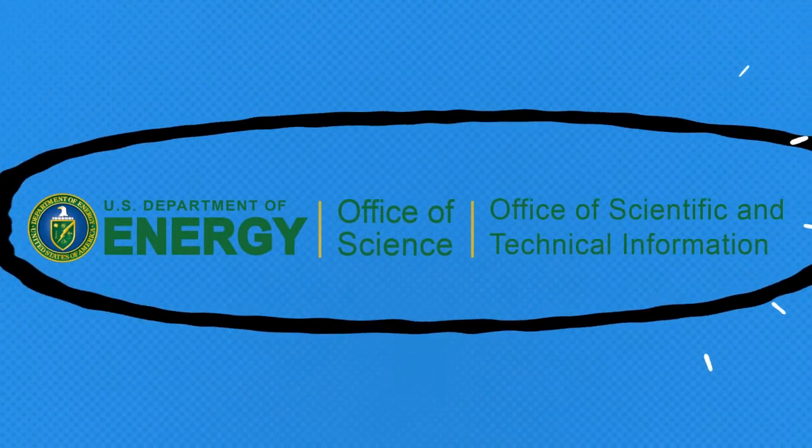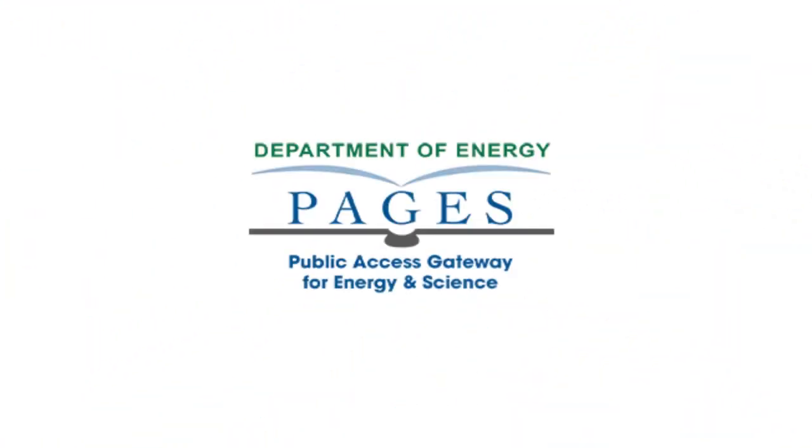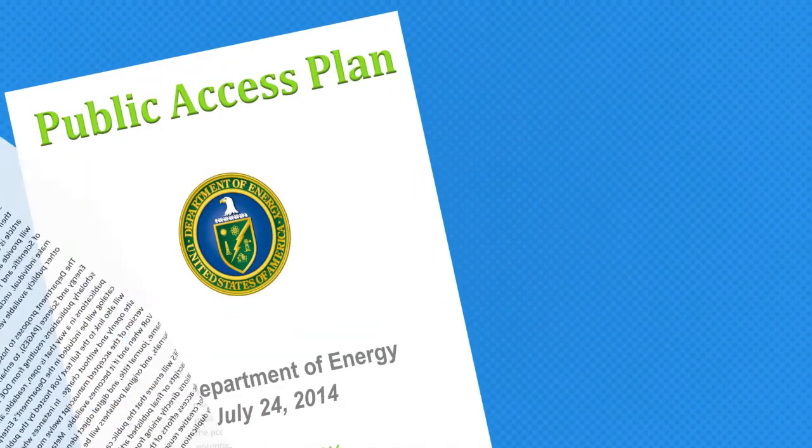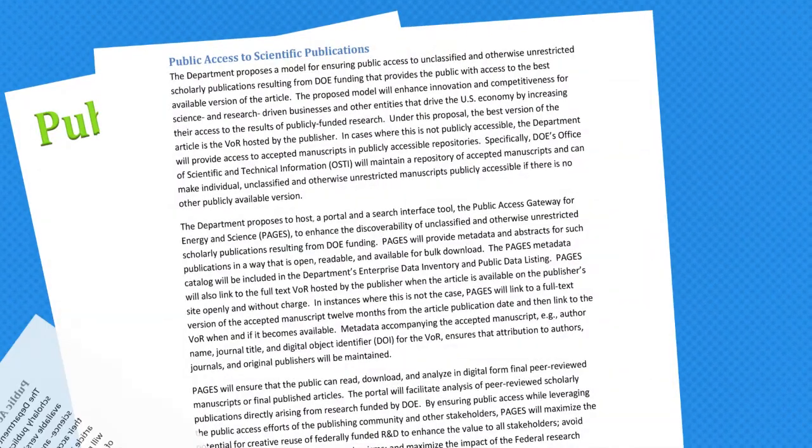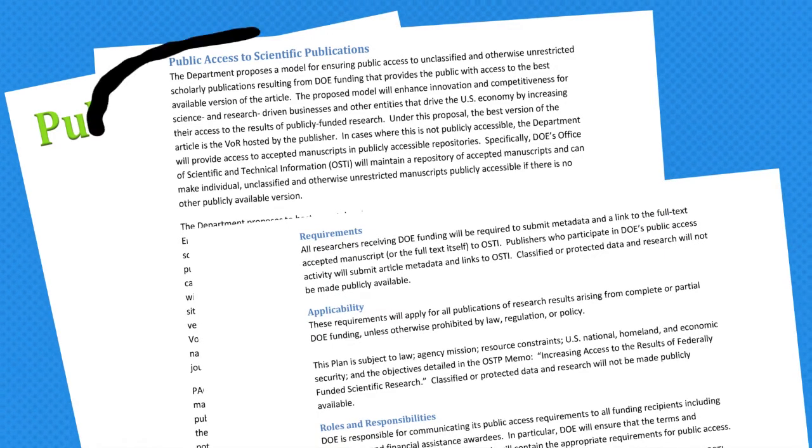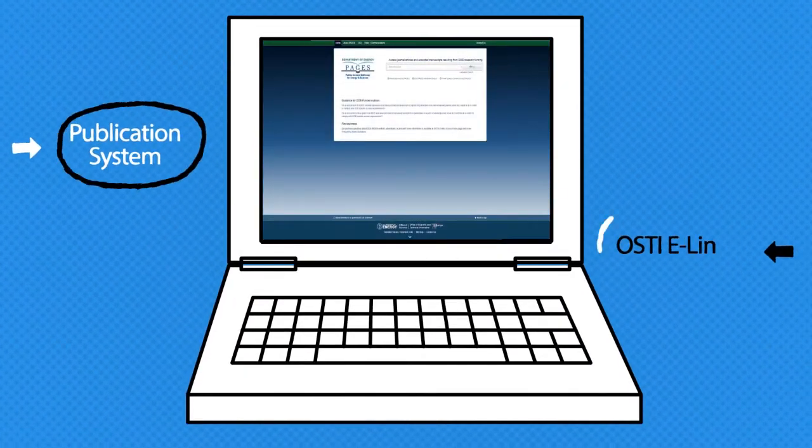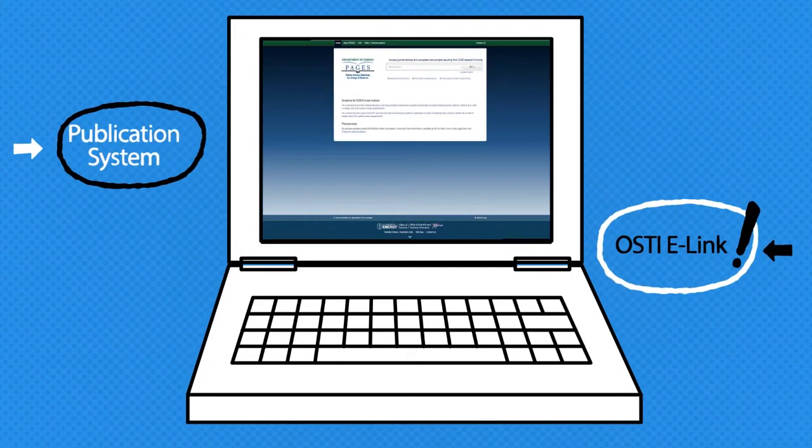Introducing the Department of Energy Office of Scientific and Technical Information Public Access Portal called DOE Pages. It was created to provide free public access to articles by DOE-funded researchers. To get their papers into DOE Pages, all DOE-funded researchers are required to submit their accepted manuscripts to their lab's publication system or directly to OSTI.